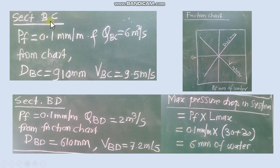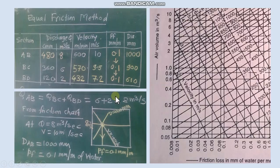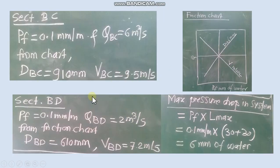Then for BC we know PF value that as per the method we write everywhere as the same. Now we have 0.1 and discharge in respect to duct. By using this we get for BC duct diameter and velocity. Similarly for section BD, PF value and respect to discharge from friction chart we get diameter and velocity.